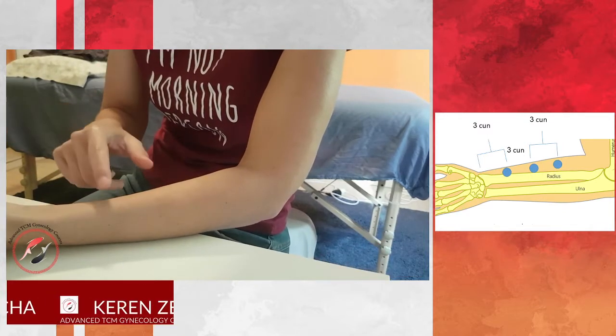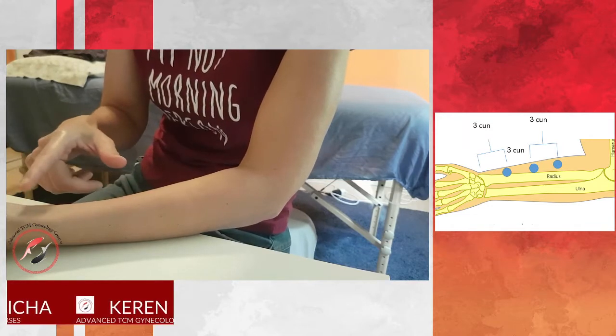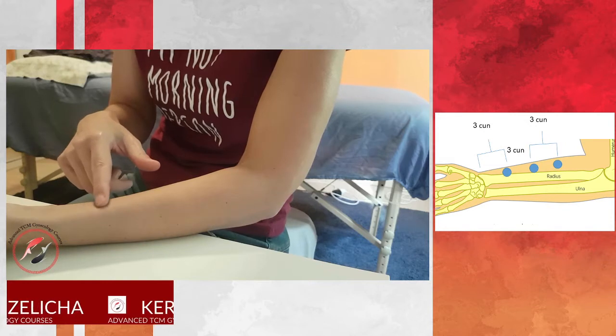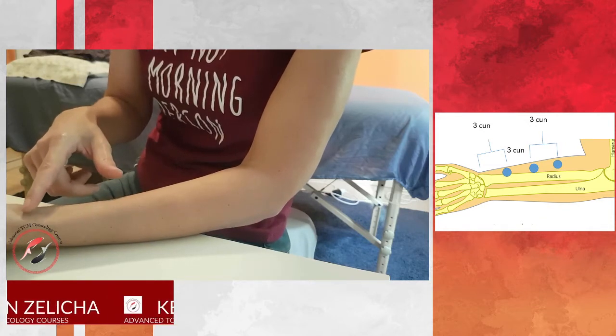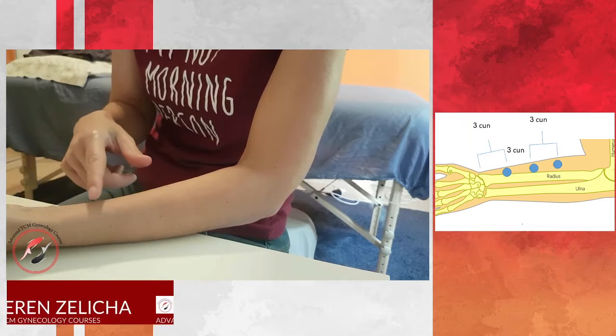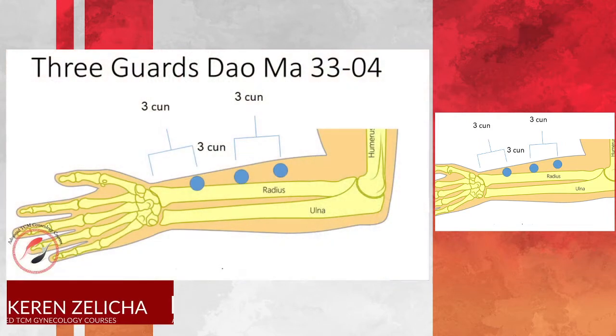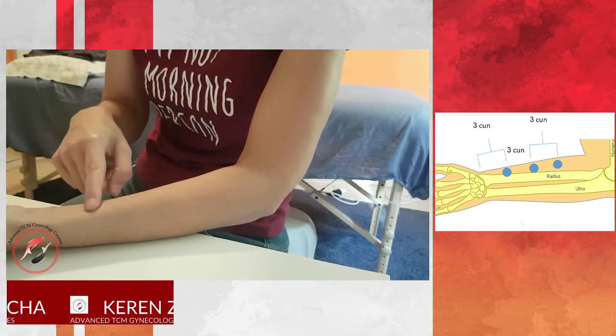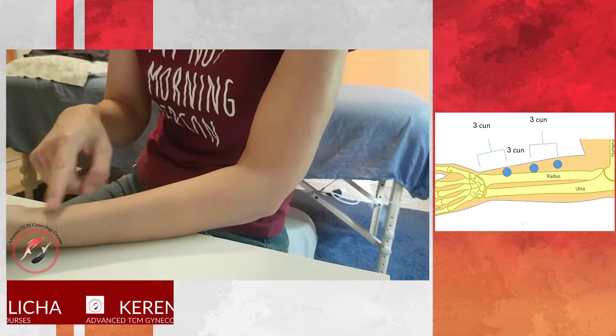So the location of the points - there are two versions for the location. The first point, the lower part, Ren Shi which is 3313, some of you will find it four tsun above lung 9, and some of the books write that the location is three tsun above lung 9. The second one is three tsun above 3313 which is the middle one, and the proximal one is 3315, located three tsun above the middle. When you choose, the location will differ according to the first one, if you located four tsun or three tsun above lung 9.